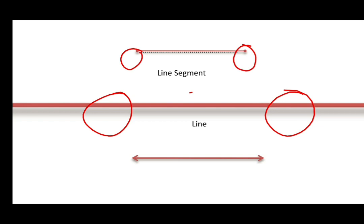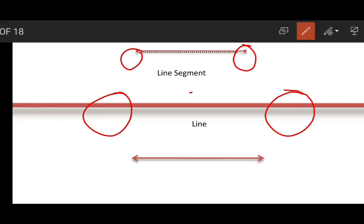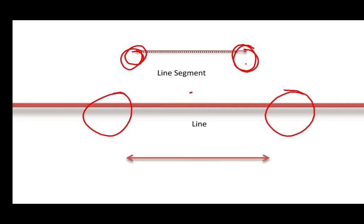Now, you can see in the above figure, line segment. Those two points are fixed. So you can say there is a limit between these two points. So this has a fixed length. Line segment has fixed length, and this line is not having fixed length because it can be extended on both the ends.